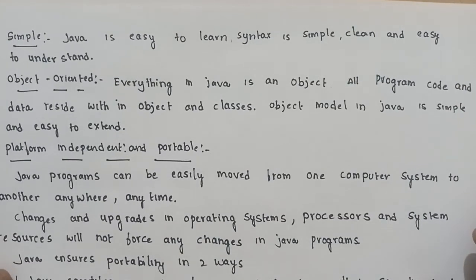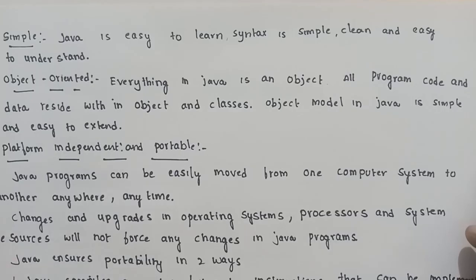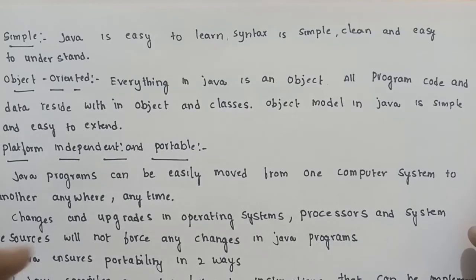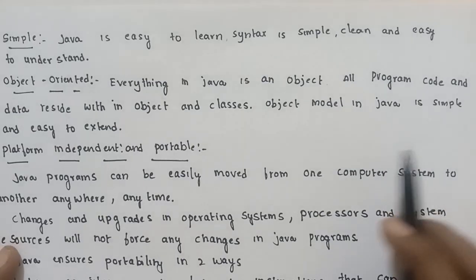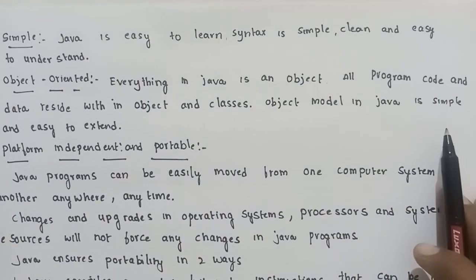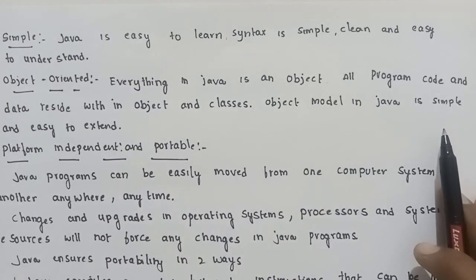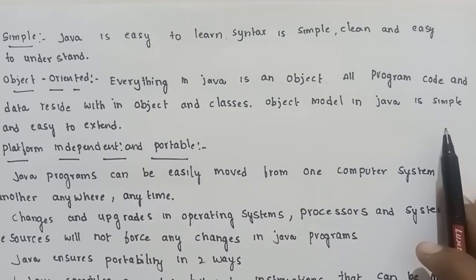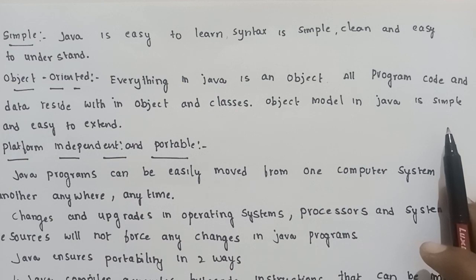Next: object-oriented. Everything in Java is an object. Objects, data, code, and methods — they are all the same. All program code and data reside within objects and classes. The object model in Java is simple and easy to extend. It is easy to understand. That is object-oriented.